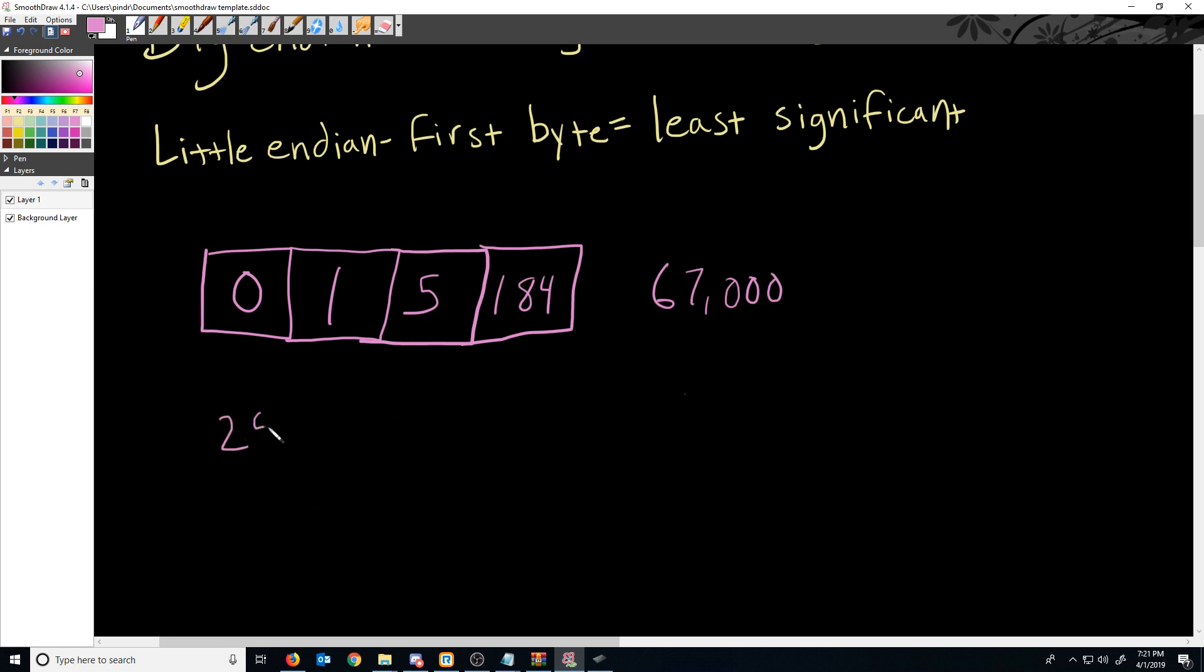Well, we would have 256 cubed multiplied by zero for this first byte. We would have 256 squared multiplied by one. We would have 256 to the power of one multiplied by five. And then we would have 256 to the power of zero multiplied by 184.